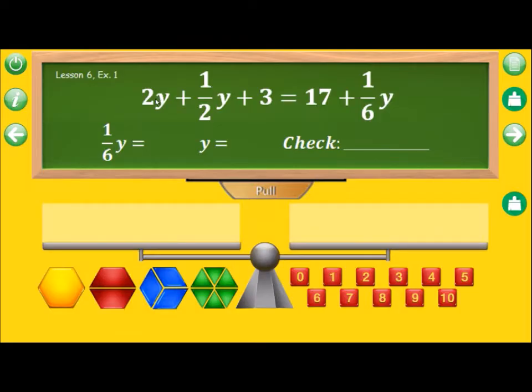So we have two y. Y are the yellow blocks. So here I have one y, two y, plus half of y. We see that the red block is half of y, plus three. That's a constant of three, so we need a cube with the number three.